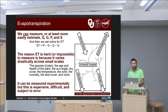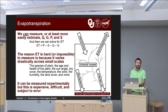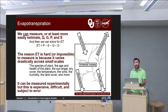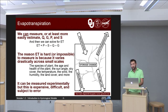The reason ET is hard or impossible to measure is because it varies drastically across very small scales on the Earth's surface. Factors that matter for calculating ET include: the species of plant involved, the age and health of the plant, sun angle, sky cover, temperature, wind, humidity, land cover, and many more. It would be hard to measure even just a few of those things, much less all of them everywhere — so that's why we try to just estimate ET instead. It can be measured experimentally, but it's expensive, difficult, and subject to error.